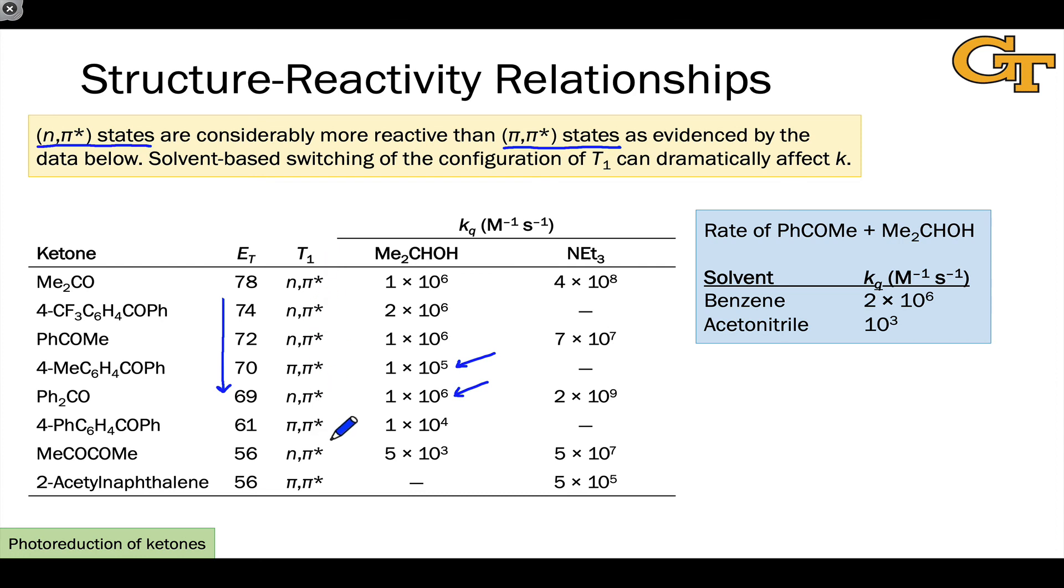Polar solvents tend to stabilize the pi-pi-star state. For example, when we look at acetophenone being quenched by isopropyl alcohol, the rate constant is quite fast in benzene where the lowest excited state is n-pi-star in character. But when we switch to a polar solvent which destabilizes the n-pi-star state, stabilizes the pi-pi-star state so that the lowest excited state is now pi-pi-star in character, the rate constant is much lower. We've decreased the rate by about a factor of a thousand just via this solvent switch.